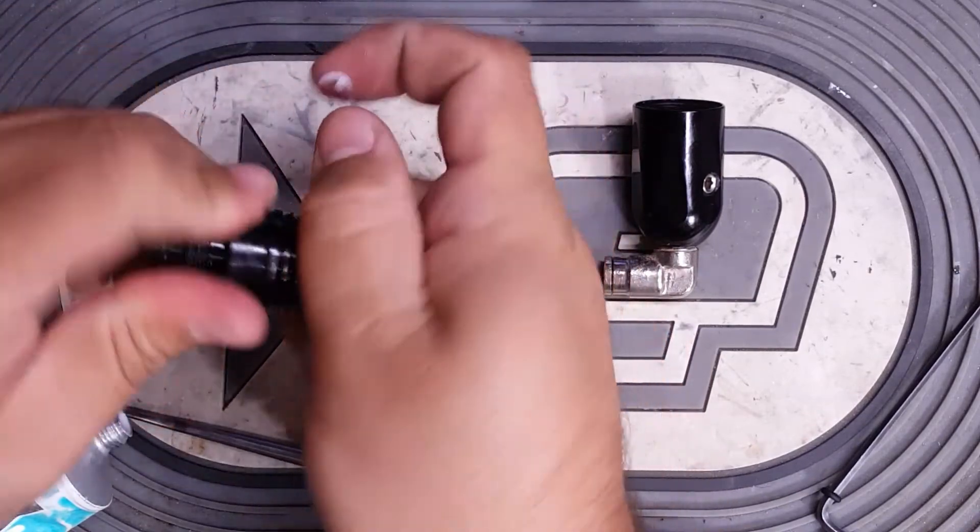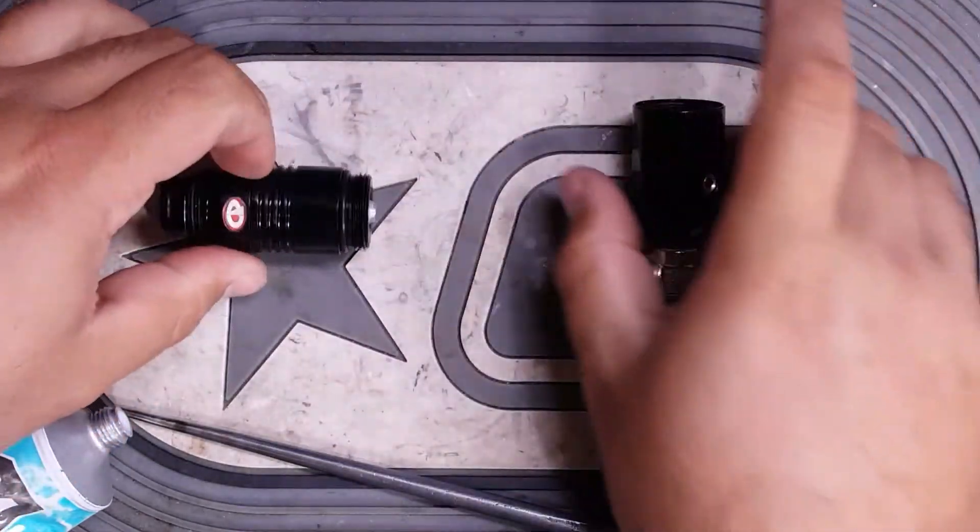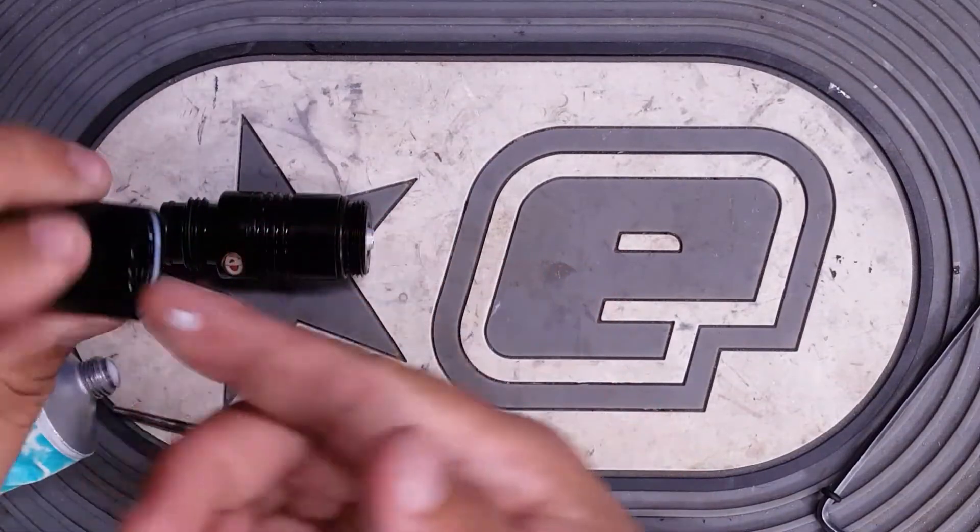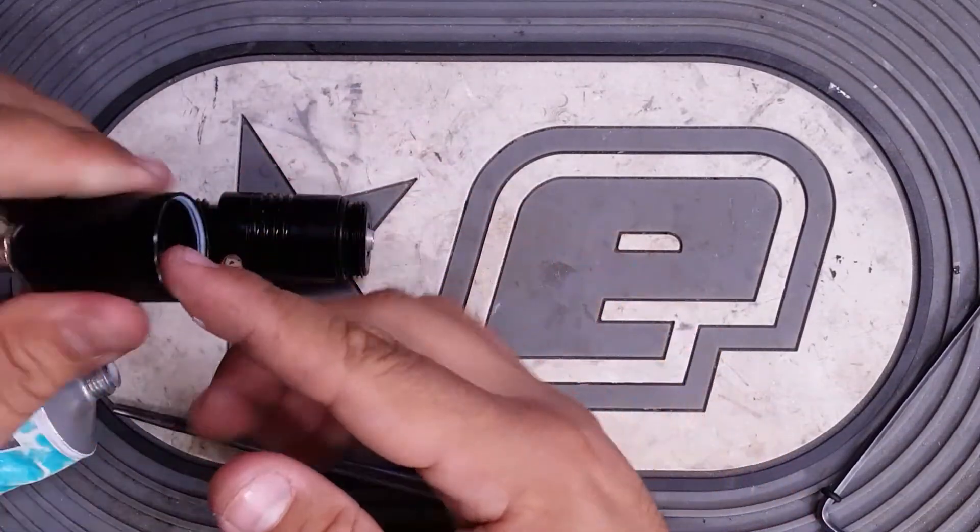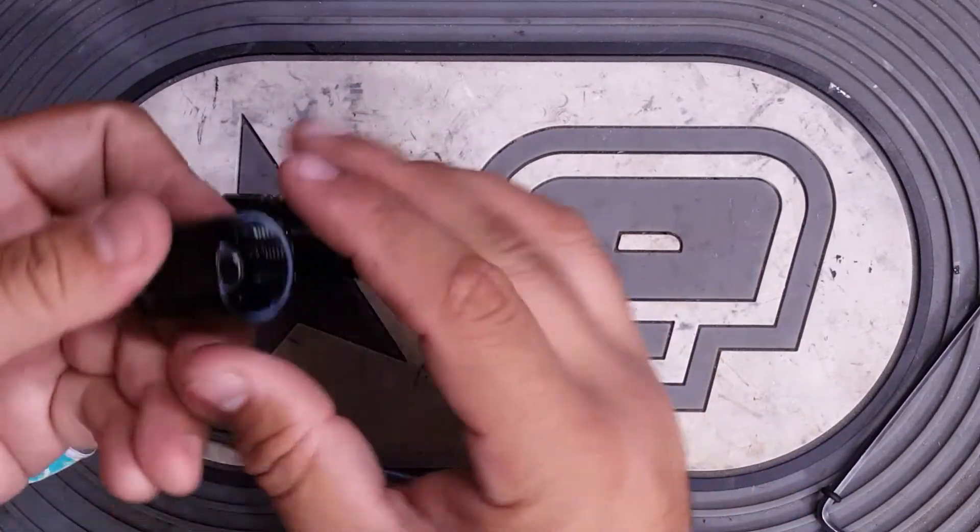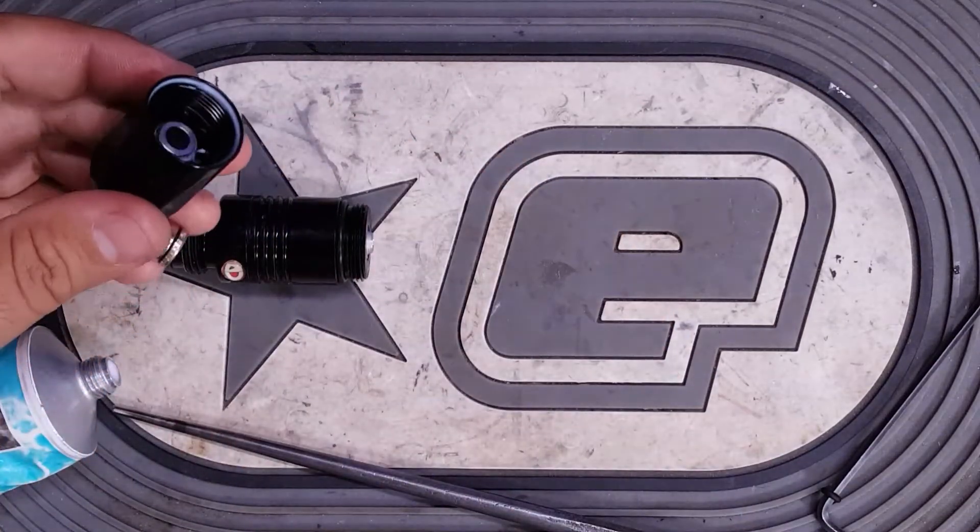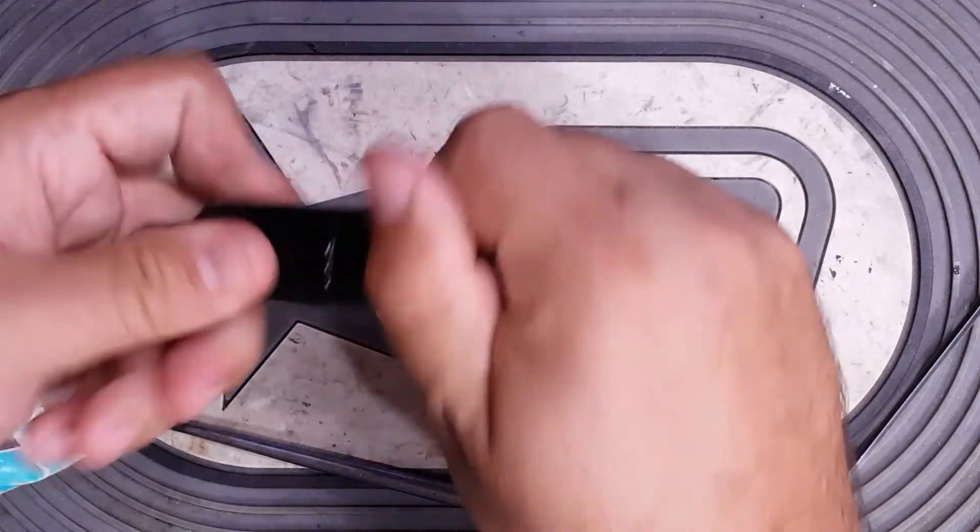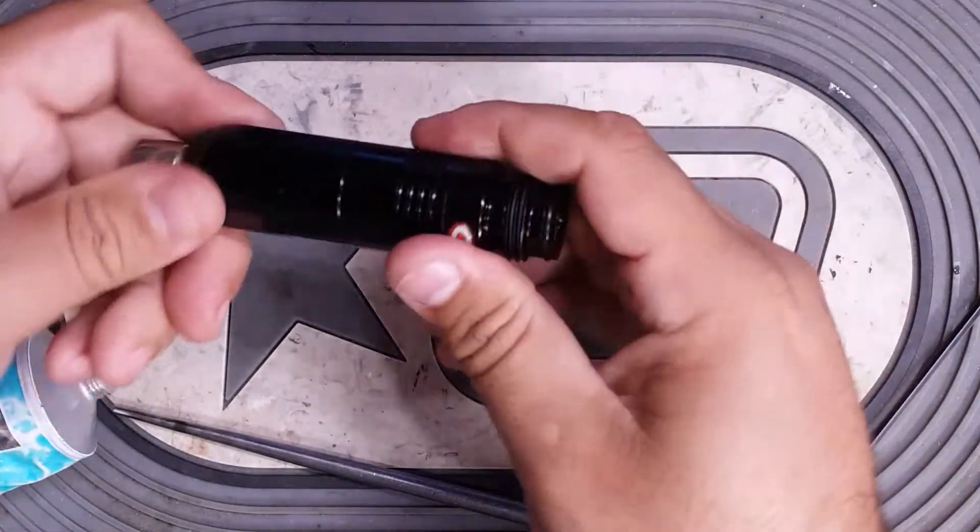That way when you screw it together it's actually pressing into the grease. And then also for the lower section, just the top lip where that 018 is sealing. There we go.